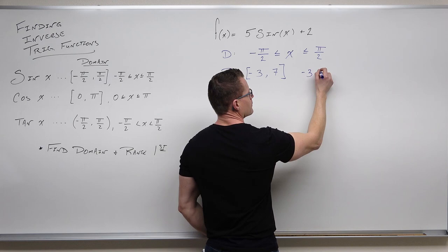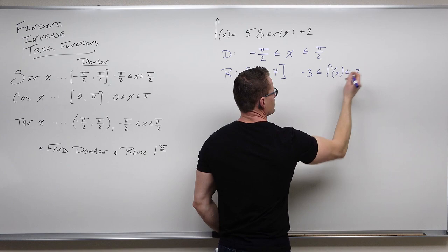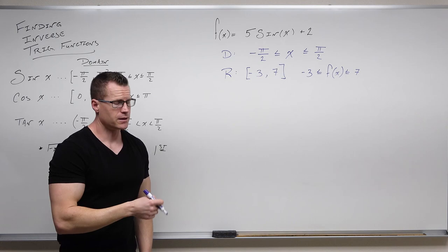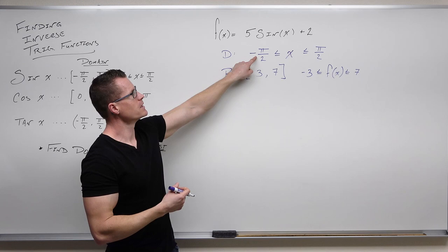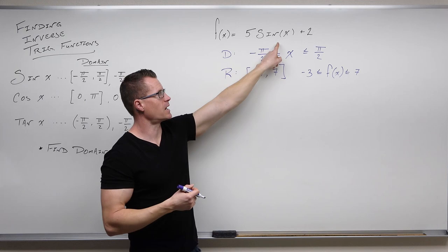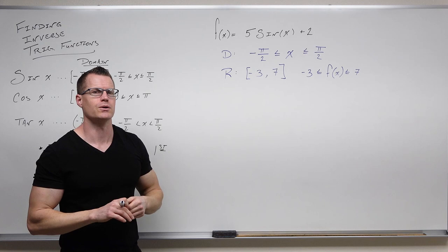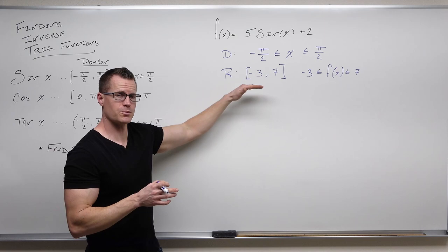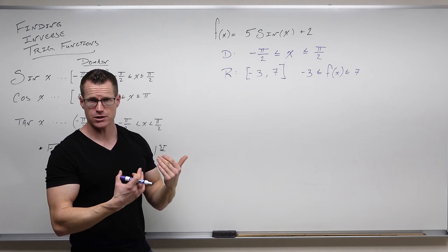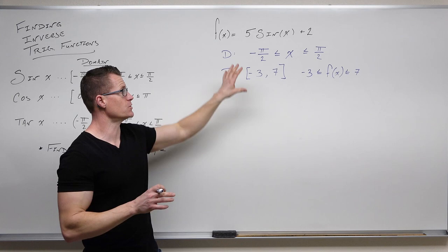You can also verify it by plugging in directly: sine of negative π/2 is negative 1, and 5 times negative 1 plus 2 is negative 3. Sine of π/2 is 1, and 5 times 1 plus 2 is 7. That's also okay to do. Now that we've determined our domain and range, we'll go through the process of finding the inverse function — range will become domain and domain will become range.